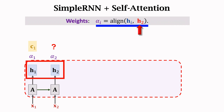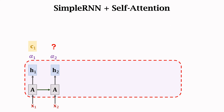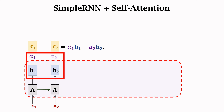Here, H2 is the current state. We compare H2 with all the existing states, including H2 itself. H1 is one of the existing states. We do the comparisons for all i and denote the computed weights by alpha_i. We got two alphas, each corresponding to one H vector. The new context vector is the weighted sum of the existing states H1 and H2. The initial state H0 is ignored because H0 is a zero vector. This is the new context vector C2 — it is the weighted sum of H1 and H2, with weights alpha_1 and alpha_2.